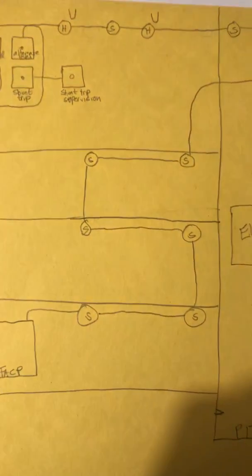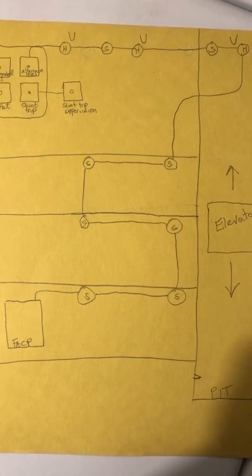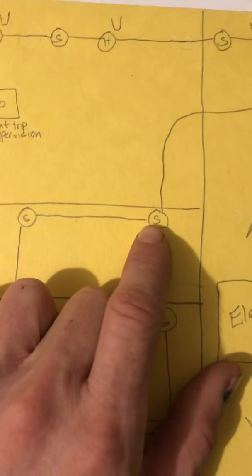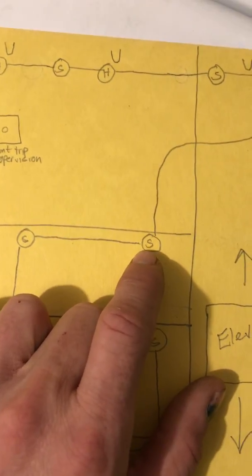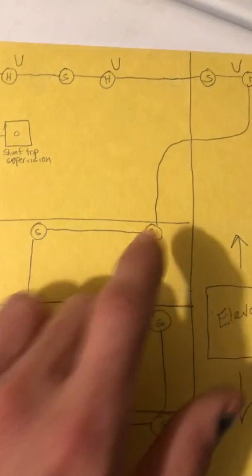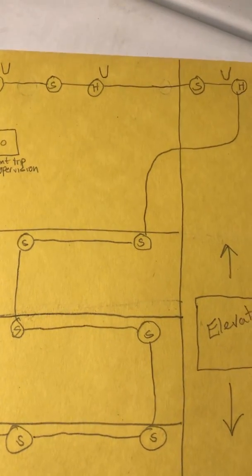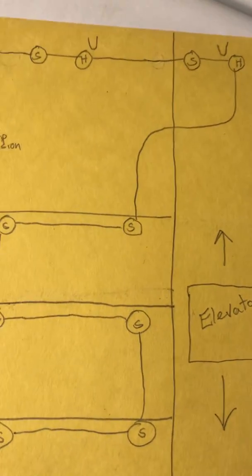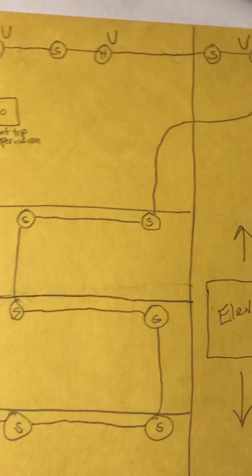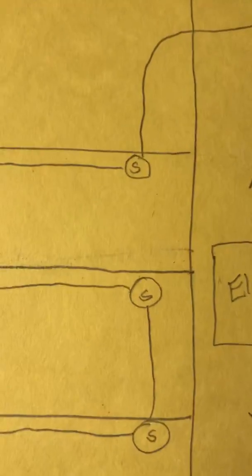Coming down on your different floors, you're going to have smoke detectors in your elevator lobbies, and you want to keep these smoke detectors within 21 feet of the center line of the elevator doors. That's the code right there.